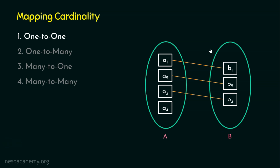Now, what about participation constraints in this example? The participation of B in this relationship set is total participation — all entities in B are participating in the relationship. However, the participation of A in this relationship set is partial participation, because some entities in A are participating and some are not. So as far as B is concerned it's total participation, and as far as A is concerned it is partial participation.